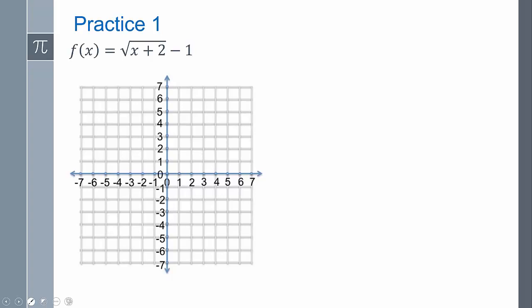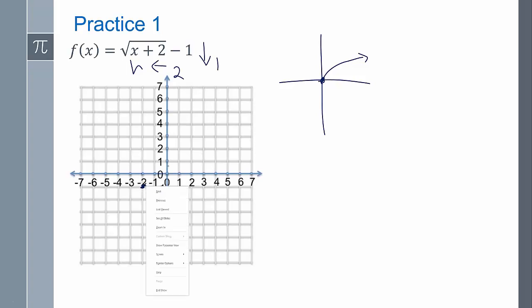So let's practice. I need to recognize what my parent function is. So it's going to start at zero zero and it's going to have that shape. That's what a rational function looks like. My H, it's going to move over two spaces to the left, and it's going to move one down. So two to the left and one down. And that's good enough. I mean, it's probably not ultra accurate, but it's good enough for right now. We're just drawing a sketch of what it needs to look like.